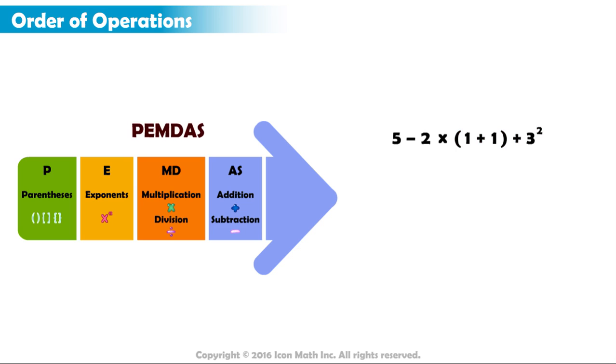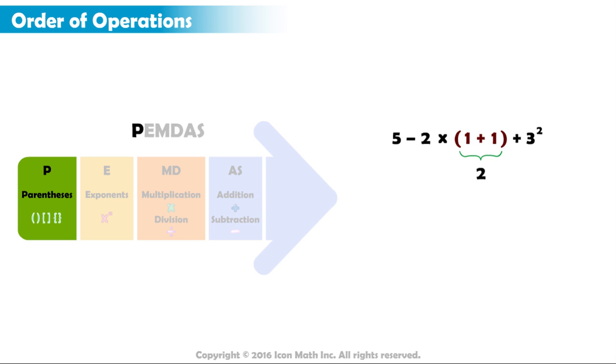Let's think about PEMDAS. P is for parentheses. The first step is to calculate any expressions inside parentheses. 1 plus 1 equals 2.